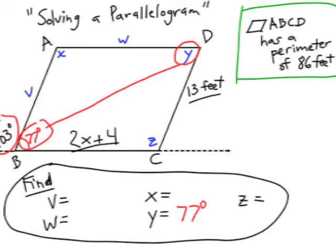I also remember that in a parallelogram, consecutive interior angles are supplementary. So if angle Y is 77 degrees, angle Z must be 103 degrees, and angle X is also 103 degrees.